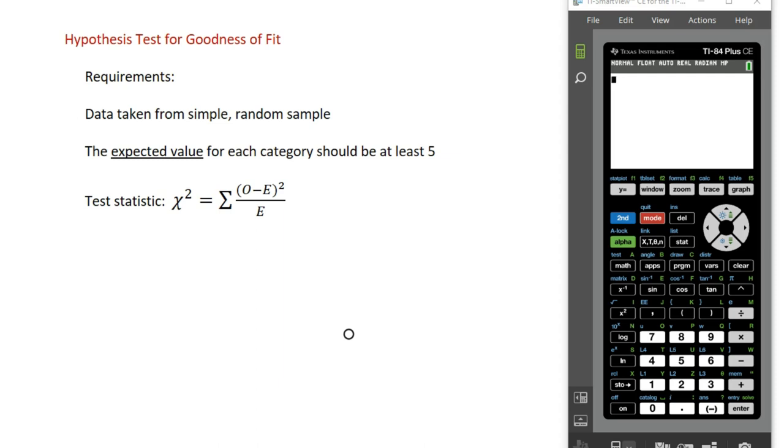The test statistic we use here is not a z or a t statistic. It's a chi-square statistic, and the chi-square statistic is the sum of observed minus expected value squared divided by expected values.